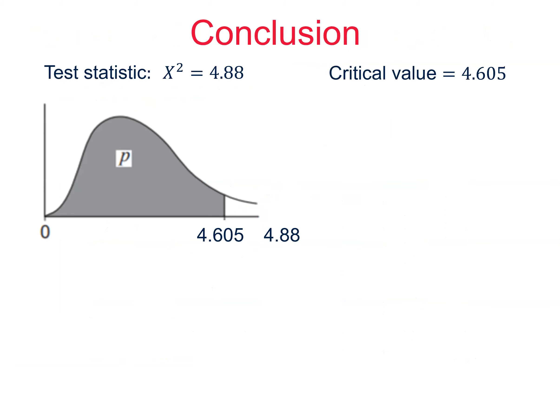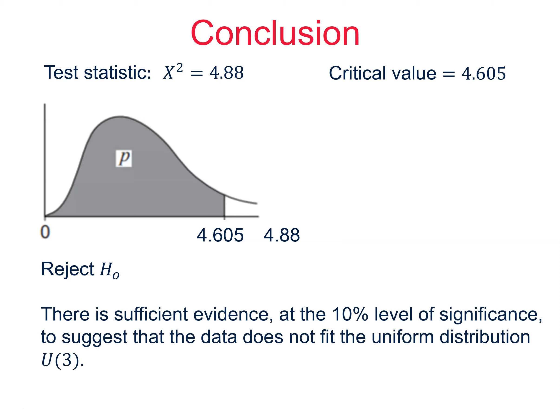This time, our value of x squared is bigger than the critical value, so it's unlikely, and we reject the null hypothesis. Our conclusion, in context, is that there is sufficient evidence at the 10% level of significance to suggest that the data does not fit the uniform distribution.